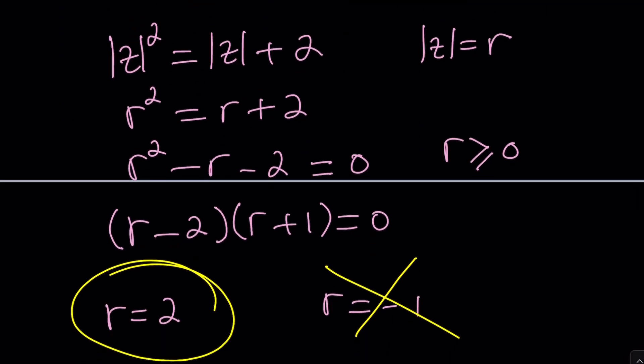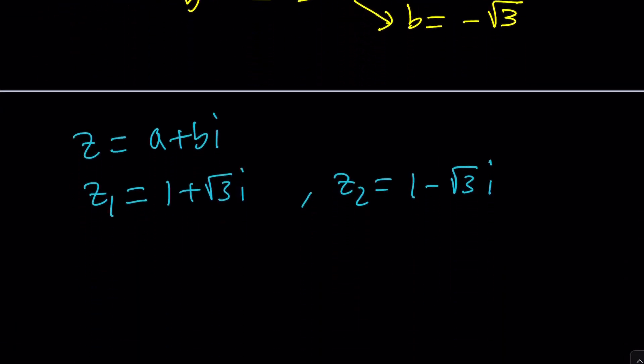So there are two solutions. They are 1 plus root 3 i and 1 minus root 3 i. Now, is there another way to solve this problem? Probably. You could probably just take this and then square this. And that's going to give you a product. And you could replace the product with something like that. I don't know. I haven't tested it out. But this is where I want to end this.